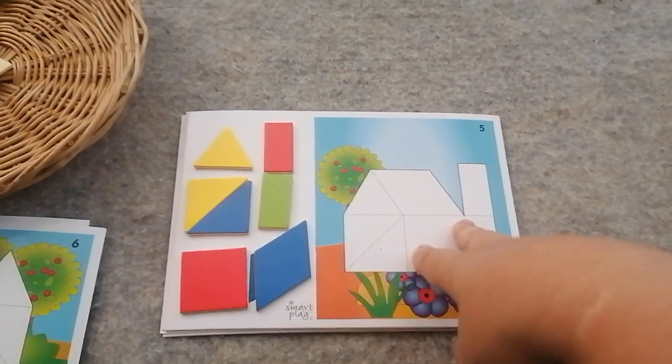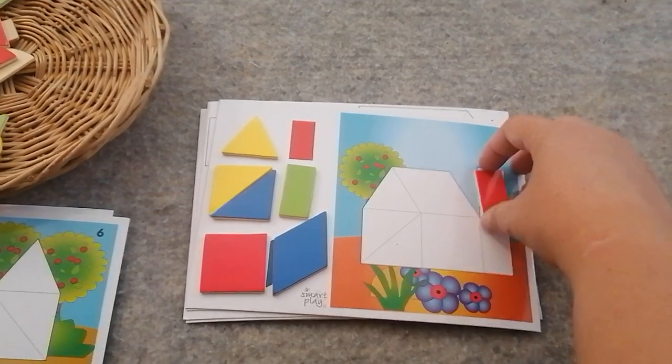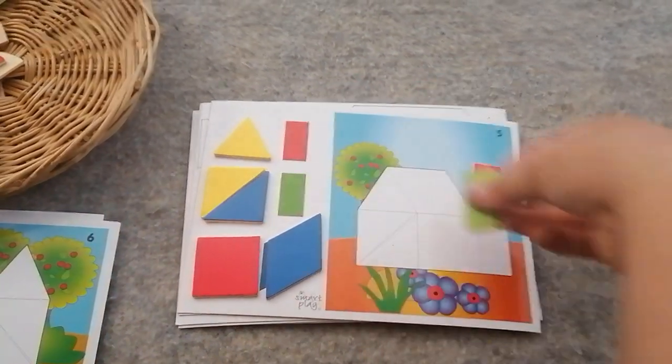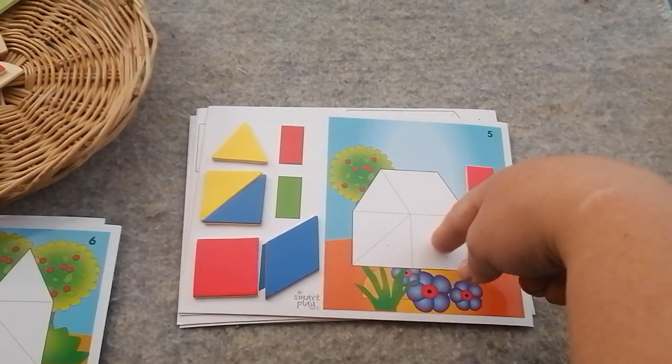So there's all my shapes, now I need to figure out how they fit into this house. That's a rectangle and that's a rectangle. So we can put the rectangles over here. That's easy enough. Now I need a square here.